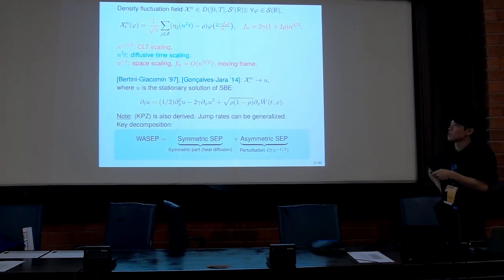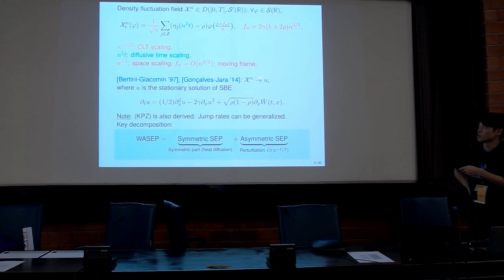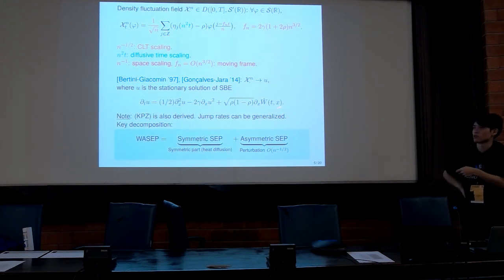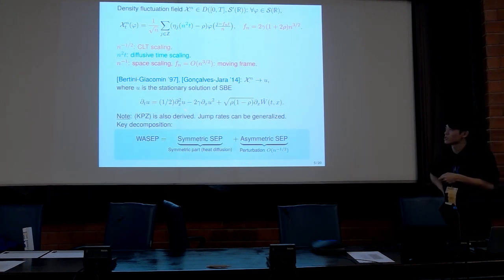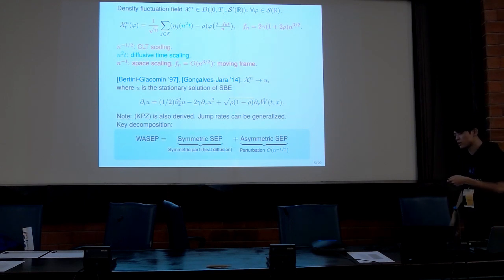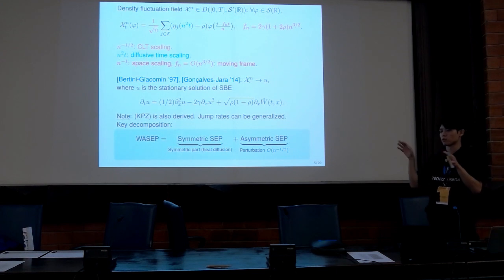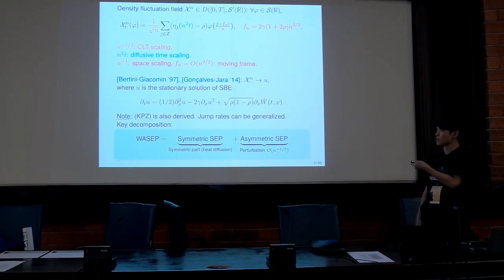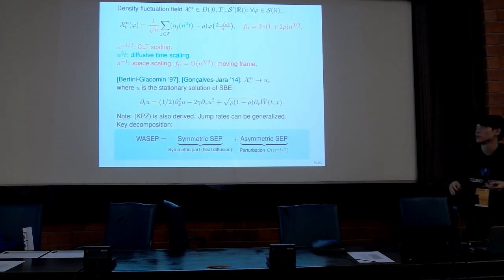Here f_n is some constant referred to as the moving frame, because there is a flow from left to right with velocity of order n^{3/2}. We have to subtract this effective velocity to see a non-trivial limit as n tends to infinity. The result by Bertini-Giacomin shows that this fluctuation field converges in distribution to the solution of the stochastic Burgers equation. This celebrated result was then extended by Patricio and Milton-Hara to various types of jump rates, and they also constructed a robust way to derive the equation from microscopic systems.